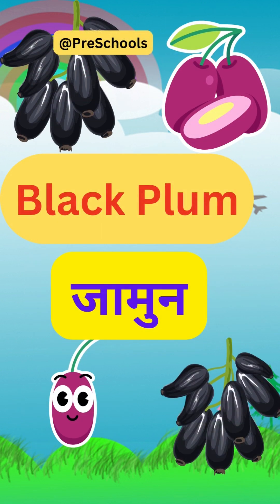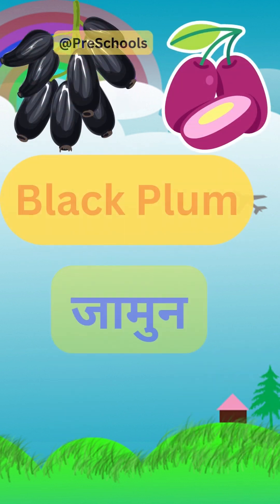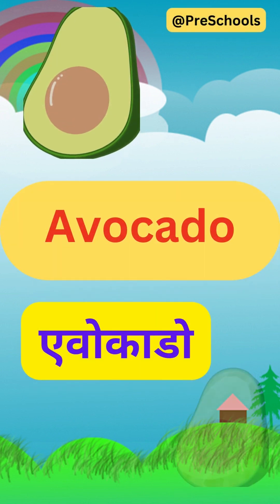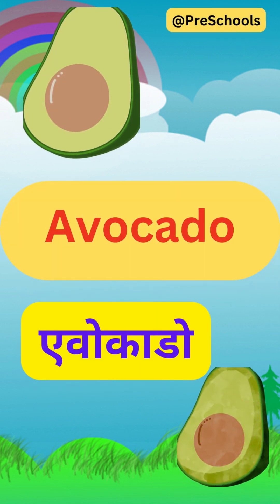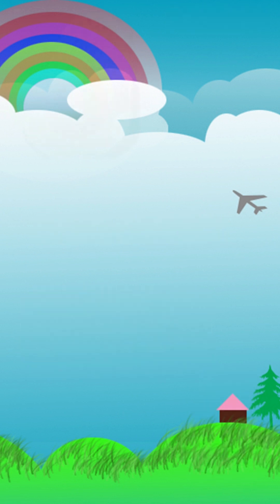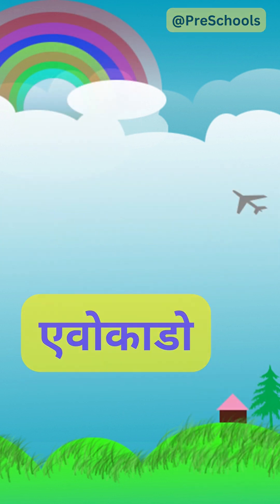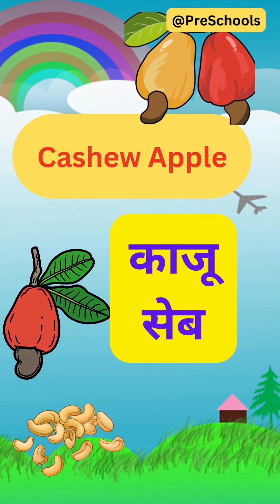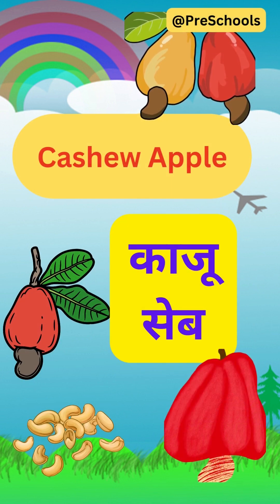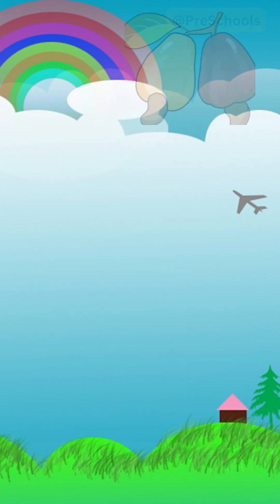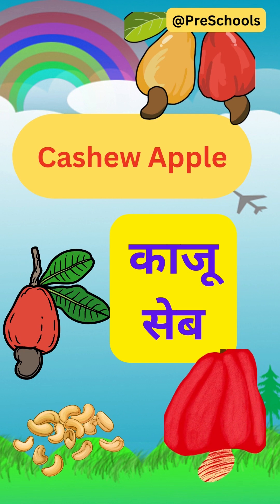Black Plum. B-L-A-C-K P-L-U-M. Black Plum. In Hindi, Jamun. Avocado. A-V-O-C-A-D-O. Avocado. In Hindi, Avocado. Cashew Apple. C-A-S-H-E-W A-P-P-L-E. Cashew Apple. In Hindi, Kaju Seb.